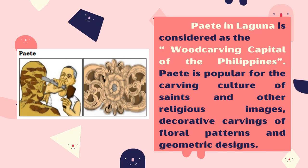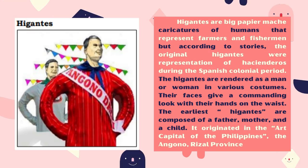Paete in Laguna is considered the wood carving capital of the Philippines. Paete is popular for the carving culture of saints and other religious images, decorative carvings of lunar patterns, and geometric designs. Higantes are big paper maché caricatures of humans that represent farmers and fishermen. But according to stories, the original Higantes were representations of Hacenderos during the Spanish colonial period. The Higantes are rendered as a man or woman in various costumes, with faces giving a commanding look and hands on the waist. The early Higantes are composed of a father, mother, and child. They originated in Angono, Rizal Province, the art capital of the Philippines.